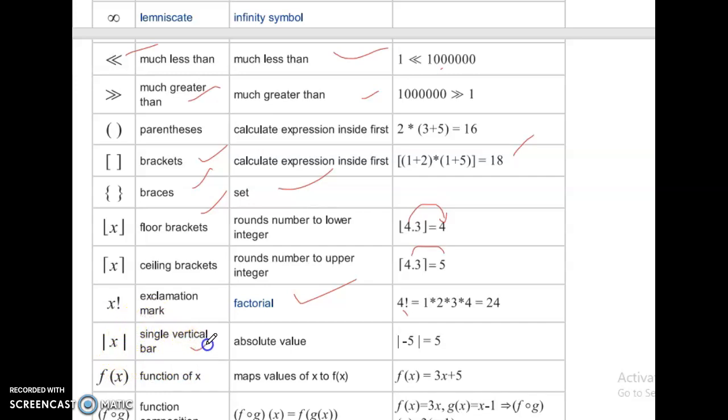Single vertical bar. Absolute value. That is, if minus 5, absolute value plus 5. No here minus. No negative sign. Can say mod, mod x also.